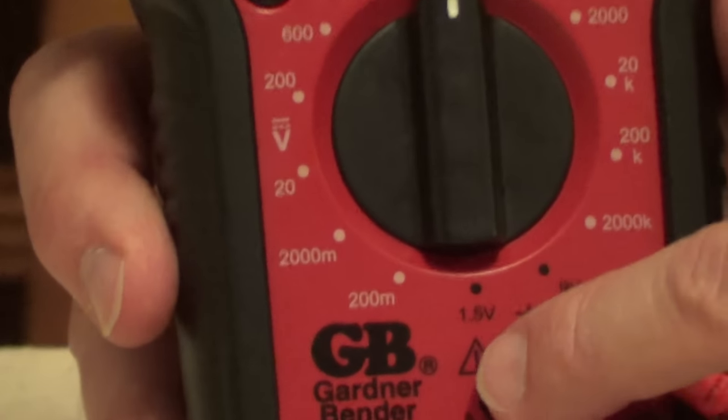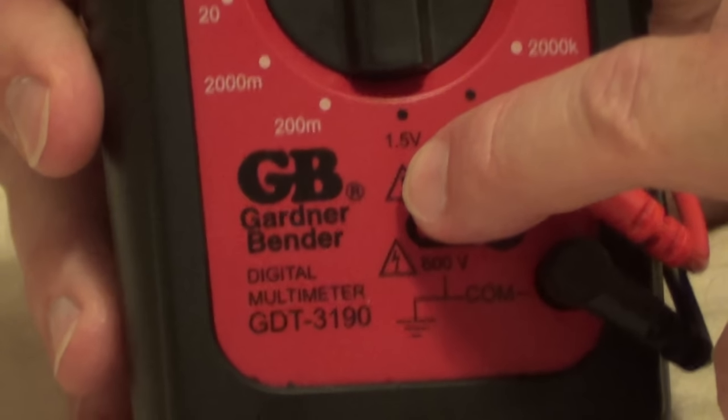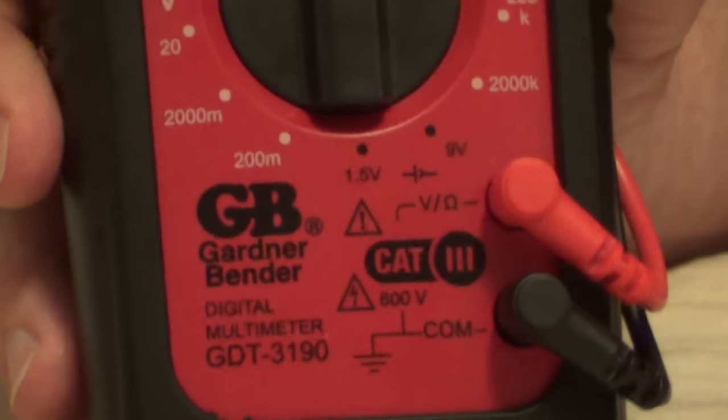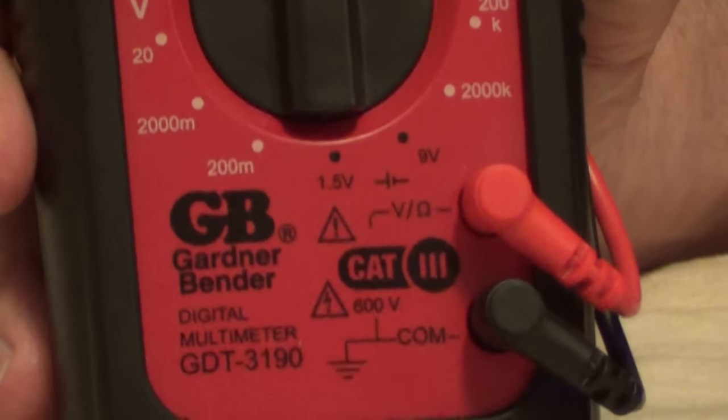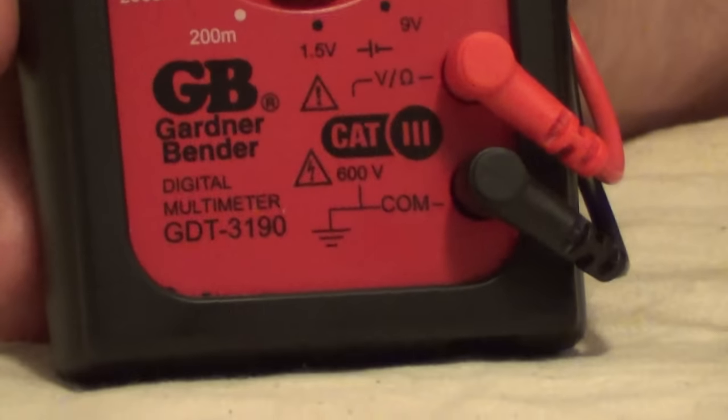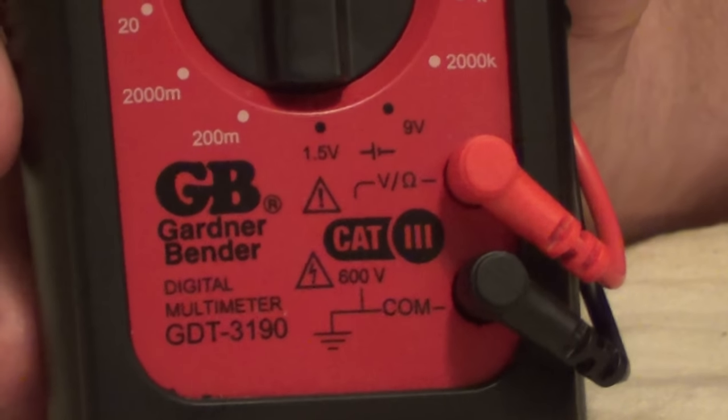And what's nice about this multimeter is it also has a test for 1.5 volt batteries and 9 volt batteries. So if you're looking for just a nice multimeter to have around the house, I really like this style.